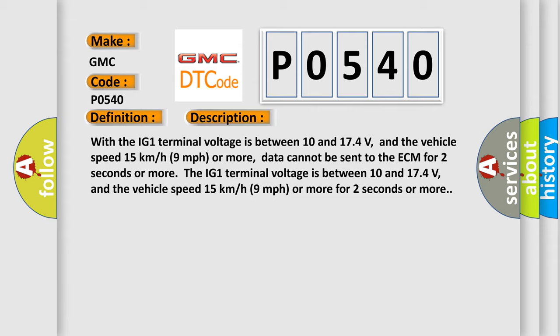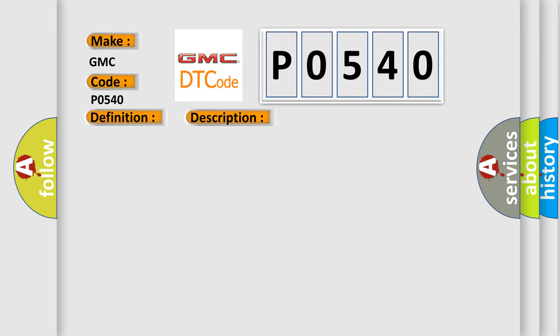The IG-1 terminal voltage is between 10 and 17.4 volts, and the vehicle speed 15 kilometers per hour or 9 miles per hour or more for 2 seconds or more. This diagnostic error occurs most often in these cases.